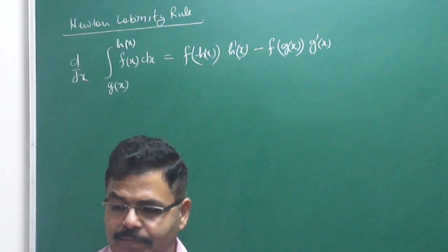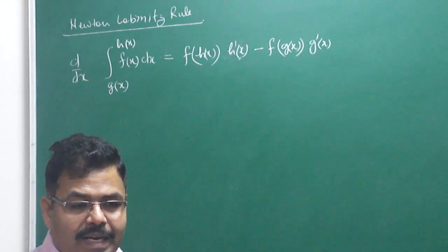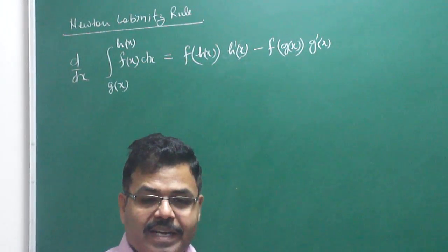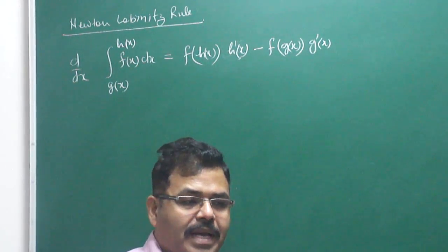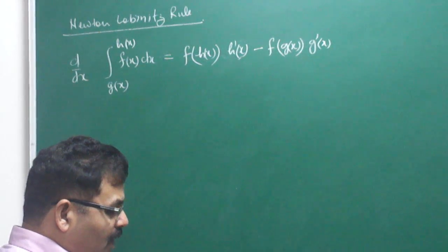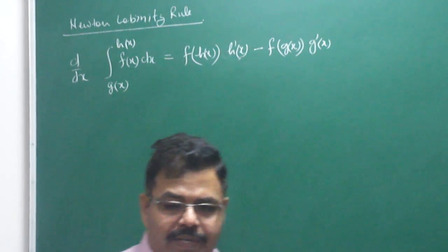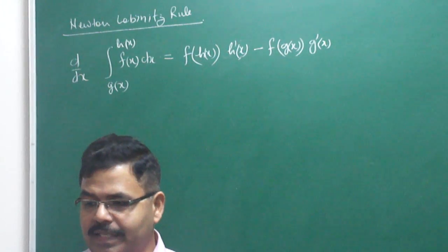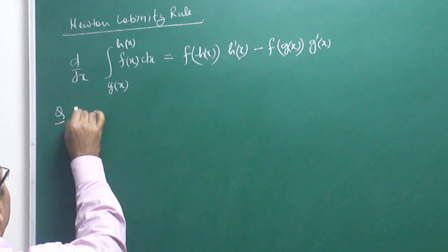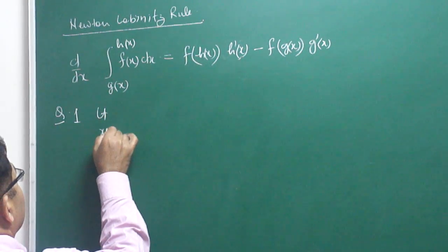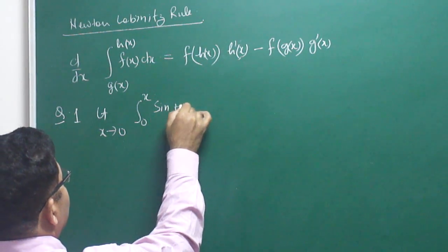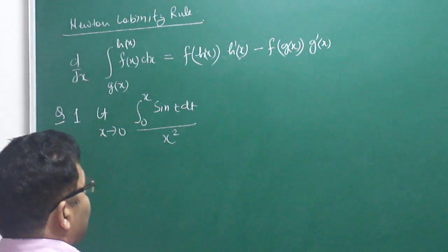Integration is the reverse process of differentiation. And therefore, using this rule, we can differentiate this type of integrand function. Now let's apply the rule to an example: limit x tends to 0 of [integral from 0 to x of sin(t) dt] divided by x².